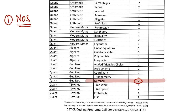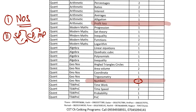Number two on the list is Profit and Loss. The complete chapter revolves around SP, CP, and MP — but the kind of confusion they create is the main problem area. One question comes every year from this topic. Some students might find this comfortable if they've understood the concepts well, but in general students are weak in these topics.